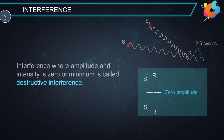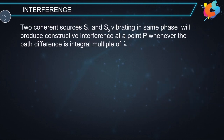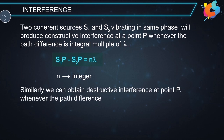Overall, two coherent sources S1 and S2 vibrating in the same phase will produce constructive interference at a point P whenever the path difference is an integral multiple of lambda — that is, S1P − S2P = nλ, where n is an integer. Similarly, destructive interference occurs at a point P whenever the path difference is S1P − S2P = (n + ½)λ, where n is an integer.